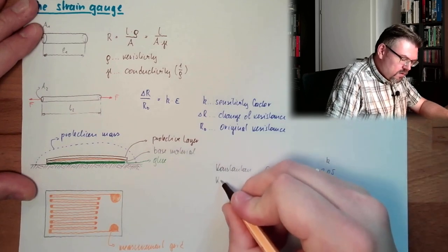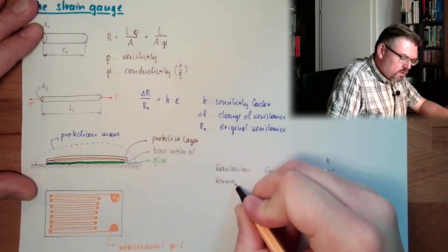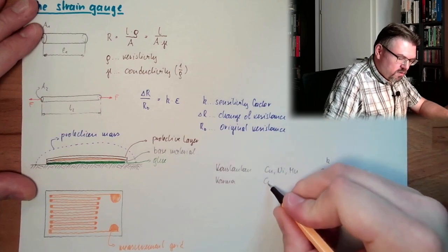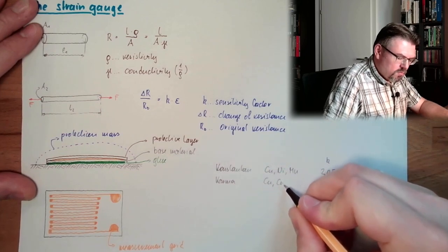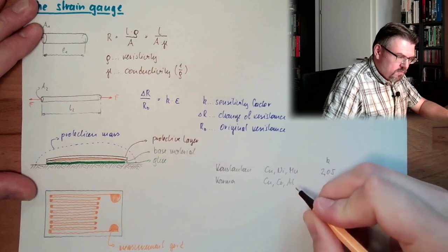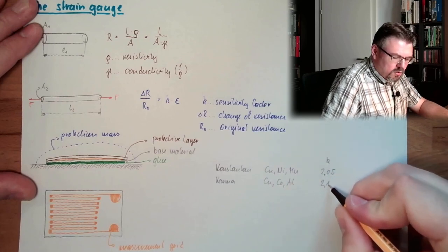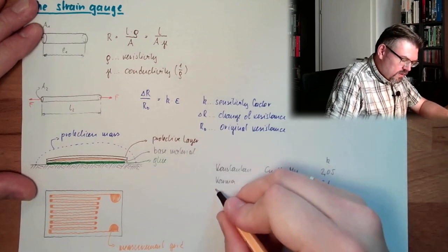Then we have karma. It's called. Also special mixture of copper, chrome, aluminium. This is 2.1. Then we have nichrome. This is nickel, chromium. This is 2.2.